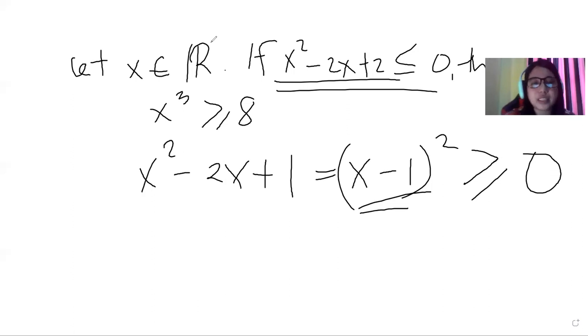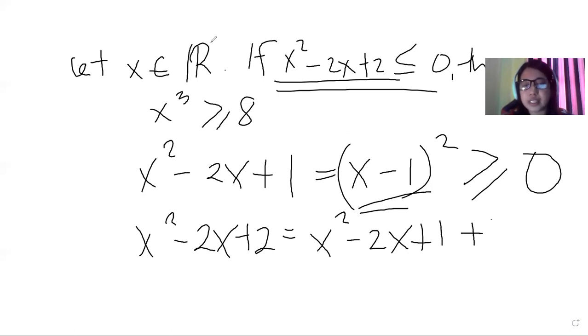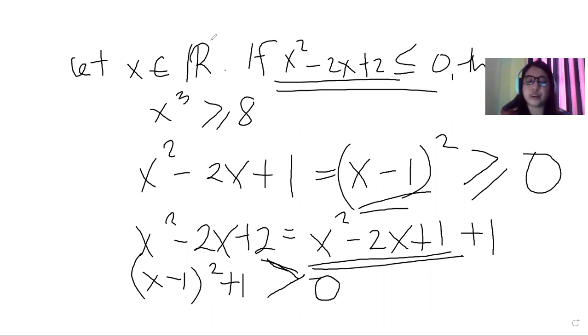Therefore, going back to x² - 2x + 2, this can actually be written as x² - 2x + 1 + 1. So this can again be written as (x - 1)² + 1, which is a positive value plus 1, which will still give us a value greater than 0.